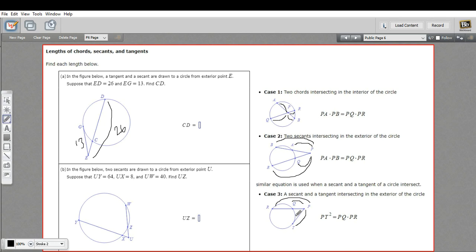So in this case, our side GE corresponds to this PT. So we're going to say GE squared is going to equal this part, EC, times the whole length, which is ED.